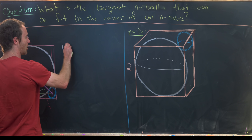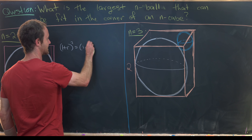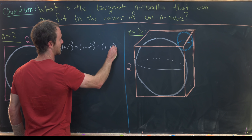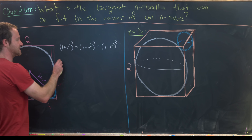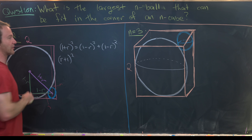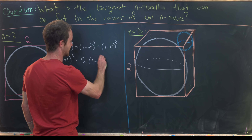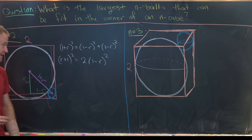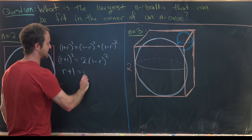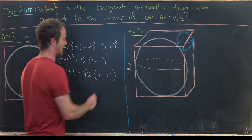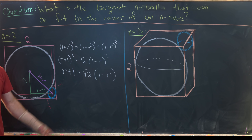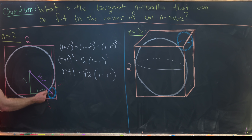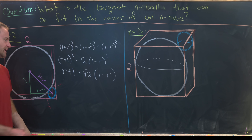Applying the Pythagorean theorem: (1+r)² = (1−r)² + (1−r)², which simplifies to (r+1)² = 2(1−r)². Taking the square root gives r + 1 = √2 · (1−r). I'll take the positive square root only, because otherwise I'd end up with a circle larger than my white circle.